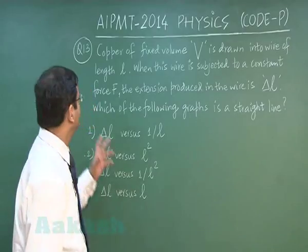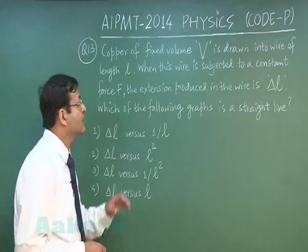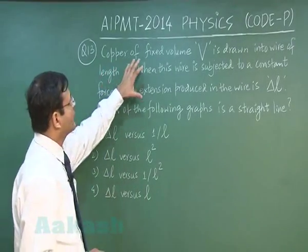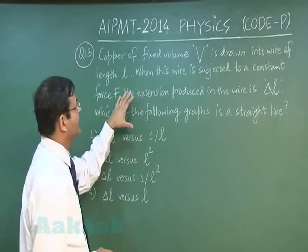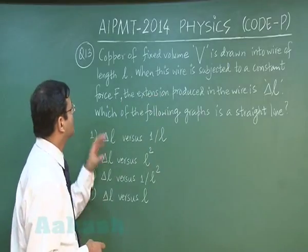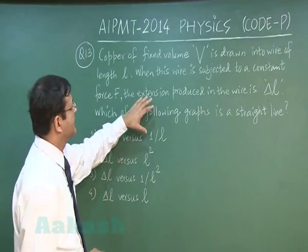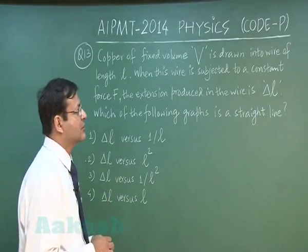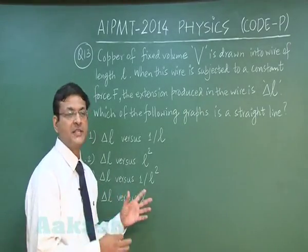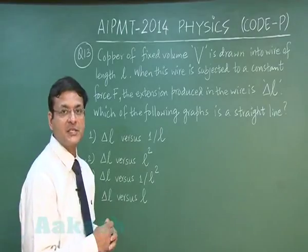Now let us discuss the next question that is question 13. It reads that copper of fixed volume V is drawn into wire of length L. When this wire is subjected to a constant force F, the extension produced in the wire is delta L. So try to see this is a question of mechanical properties of solids in which Young's modulus of elasticity will be used.